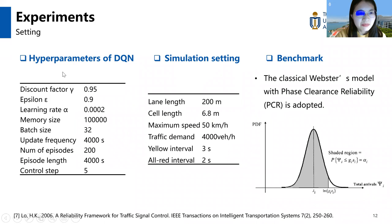Maximum speed, traffic demand, yellow interval, all-red interval are set. For the hyperparameters of DQN, discount factor, epsilon, learning rate, memory size, batch size, and other parameters are all set properly to obtain a good optimal policy. Then the classical Webster's model with phase clearance probability is adopted as a benchmark, also called the baseline. This method is from the IEEE paper, and the PCI is defined as a probability that the traffic arrivals can be cleaned within the green time of the phase.